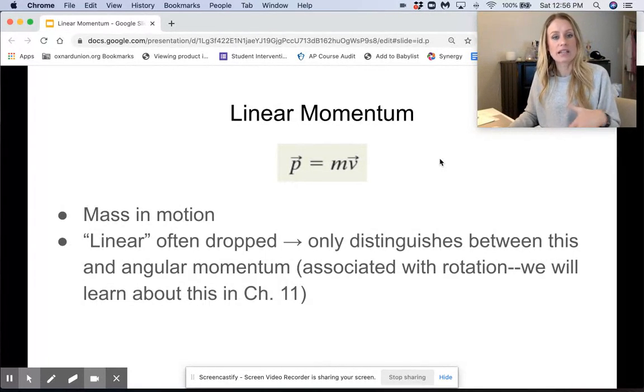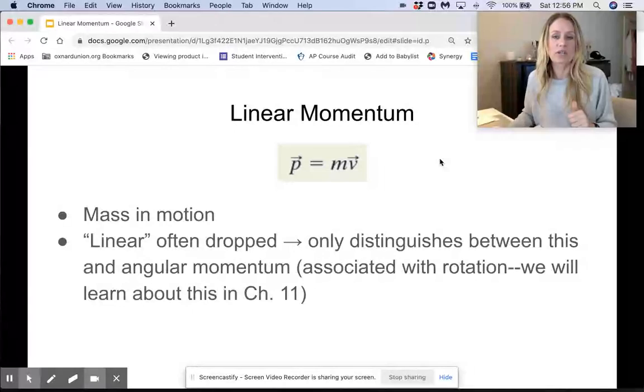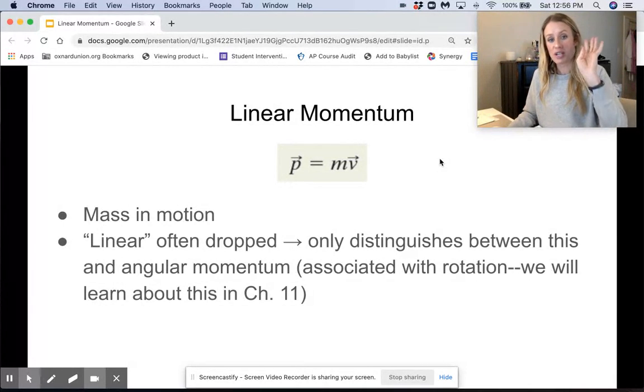Now linear in linear momentum is often dropped, so we just call this momentum. This linear term, in terms of your book and in terms of just linear momentum in general, it's just distinguishing between our momentum of something that's moving in a certain direction,